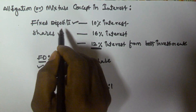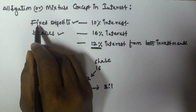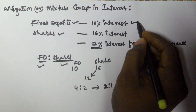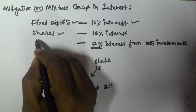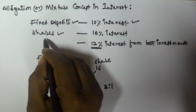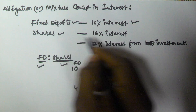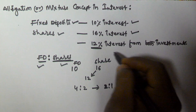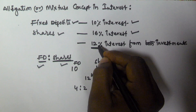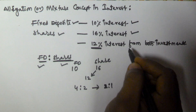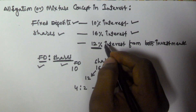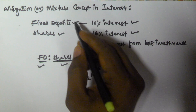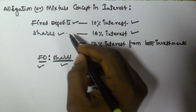A person invested a certain amount in fixed deposit which guarantees him 10% interest, and the remaining amount he invested in shares that guarantees him 16% return. From both investments he is getting 12% interest. Find the ratio of the amount he invested in fixed deposit and shares.